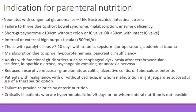Indications for parenteral nutrition include GI anomalies, surgically shortened bowel such as short bowel syndrome, malabsorption, high-output fistulas, loss of intestinal function such as prolonged paralytic ileus, malabsorption due to sprue or hyperproteinemia, and high-level GI obstruction. These serve as a rule-of-thumb guide for when TPN is indicated.